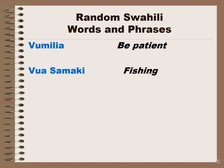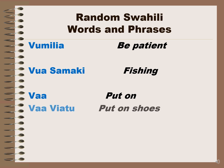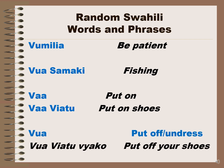Vumilia means be patient. Vua samaki means fishing. Vua also means to put on or put off. 'Vua viatu' means put on shoes, and 'vua viatu vyako' means put off your shoes.